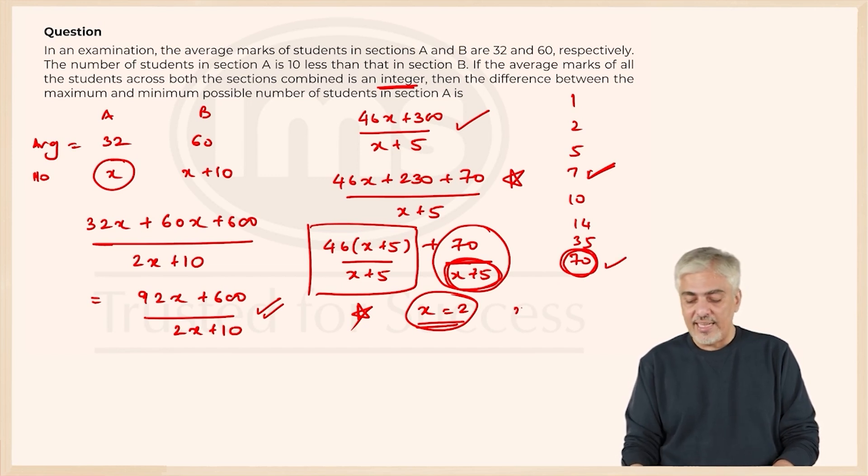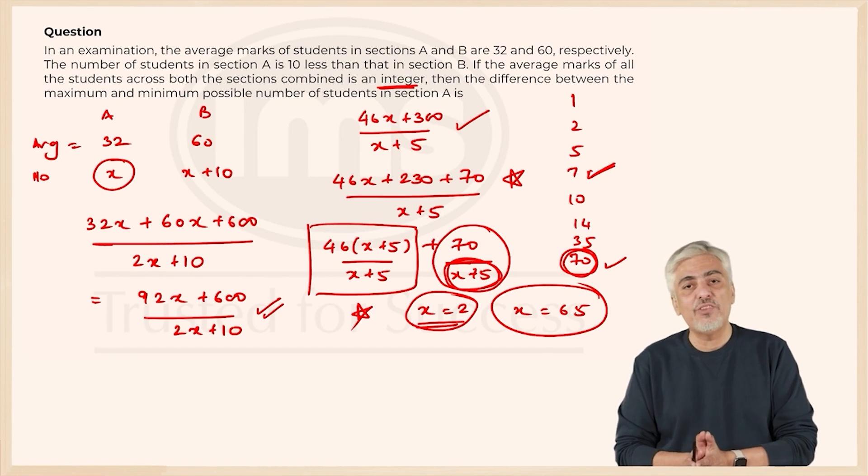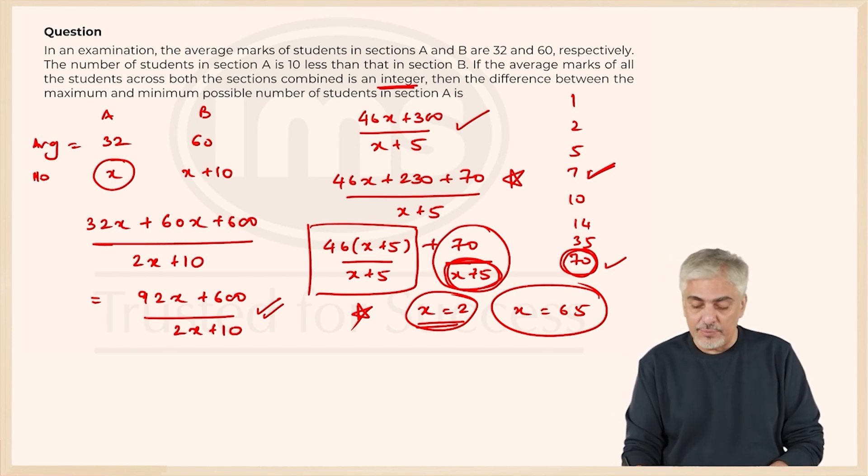And the largest possible value for x will be 65, and hence the answer which we are looking for - the difference between the two - will be 63. So the answer for this question will be 63.